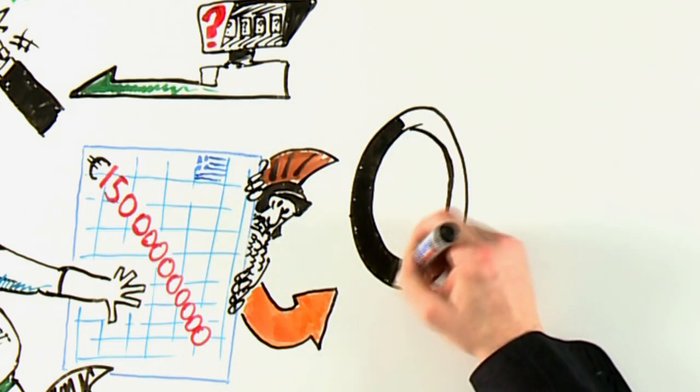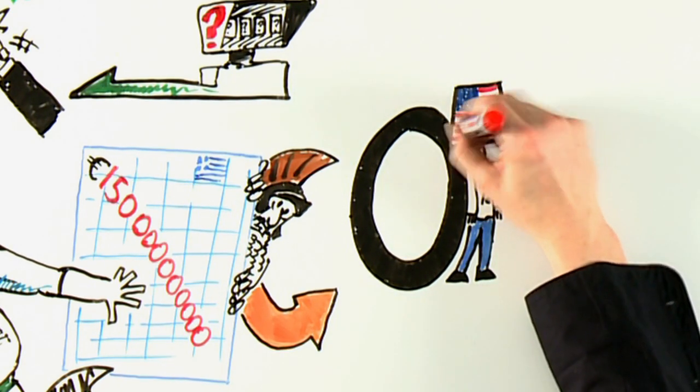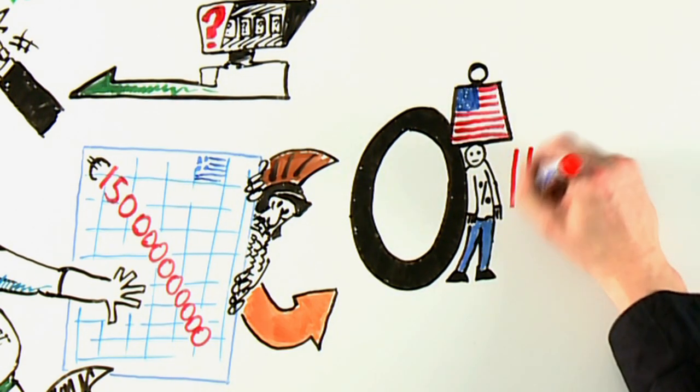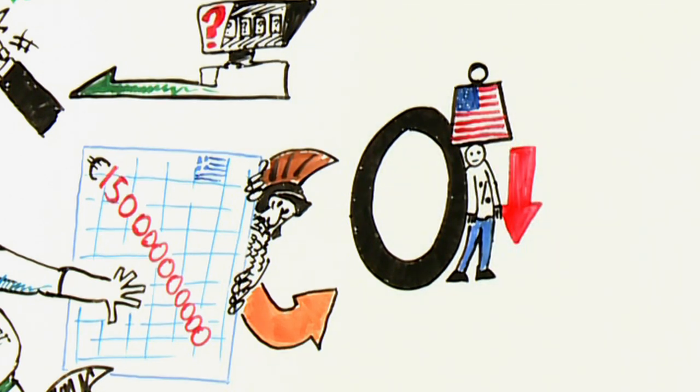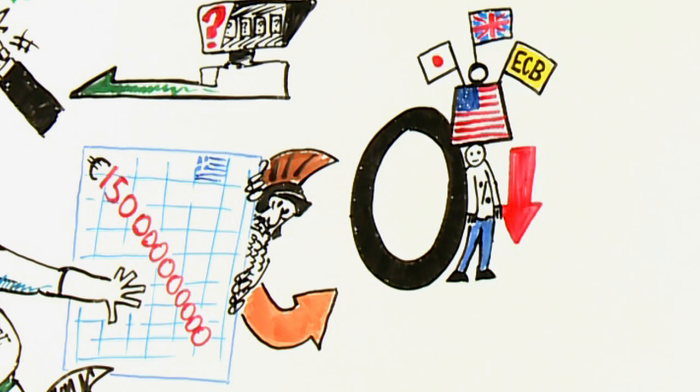But forget Greece for a minute. Everywhere else, interest rates are as near to zero as is possible. In the US, the Federal Reserve has said it will keep interest rates as low as possible for as long as necessary. The Bank of Japan, the Bank of England and the ECB are all at the same game.